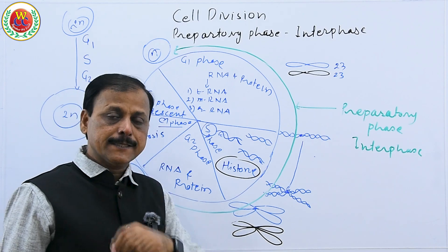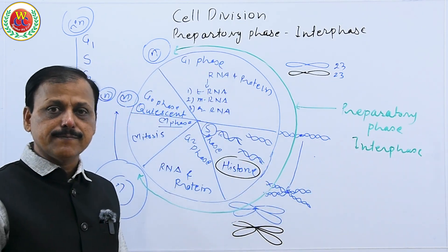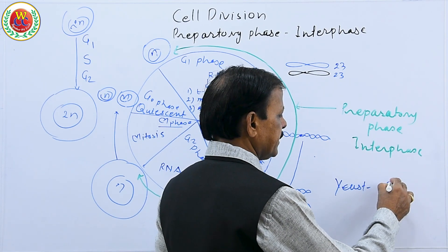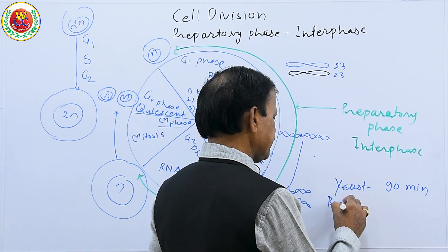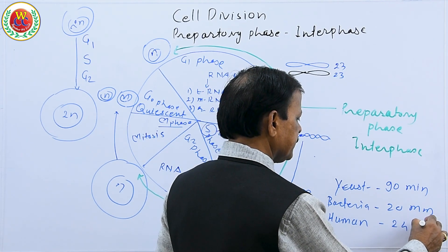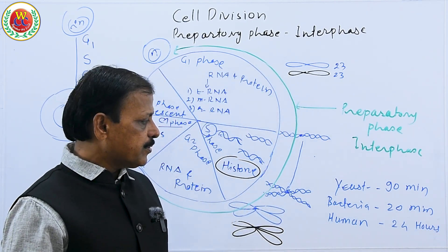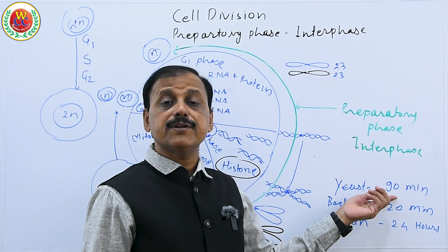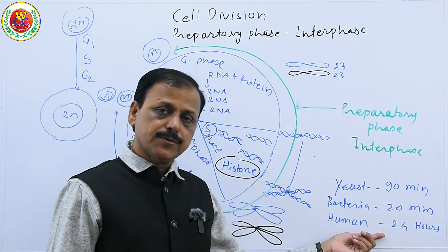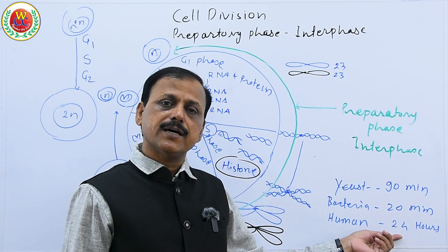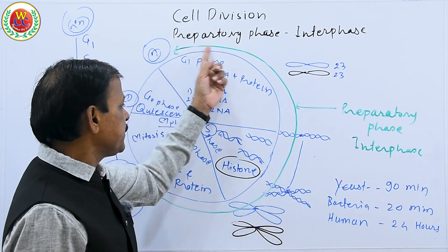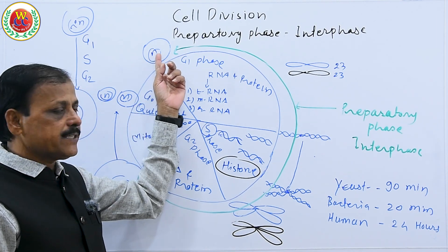This preparatory phase may take different times in different organisms. For example, yeast requires 90 minutes for cell division, bacteria takes 20 minutes, and in human beings it takes 24 hours. Out of this time, 98 to 99 percent is required for the preparatory phase, and only 1 to 2 percent is required for the actual cell division — the M phase. So out of 24 hours, about 1 to 2 hours are for cell division and 22 to 23 hours are for the preparatory phase.